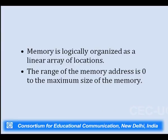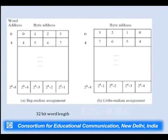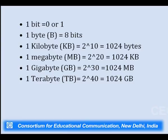Computer memory is logically organized as a linear array of locations, ranging from address 0 to the maximum size of the memory. Data can be organized in two forms: big endian assignment and little endian assignment of data into memory.